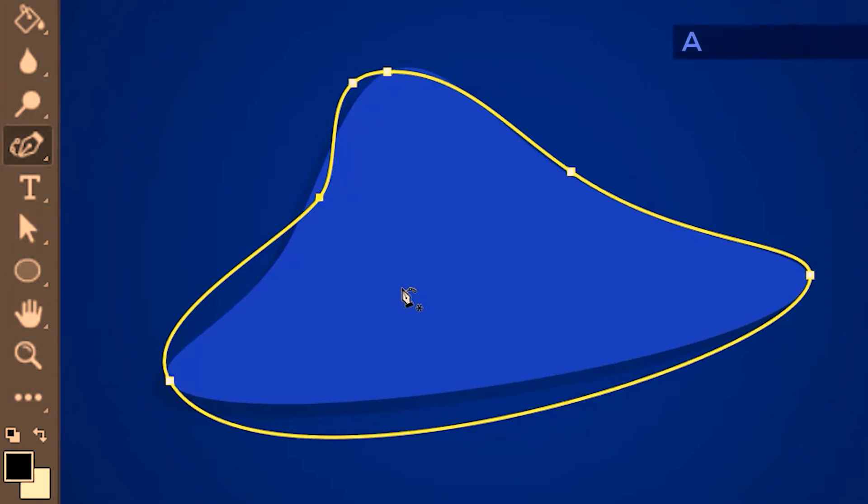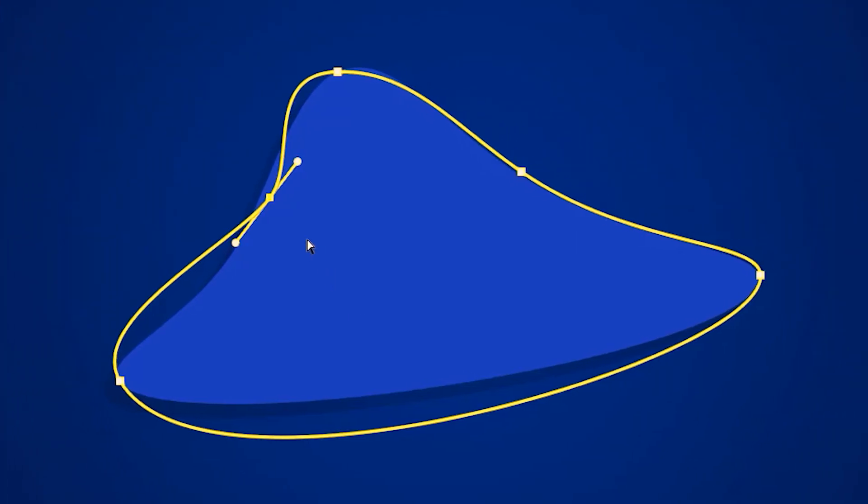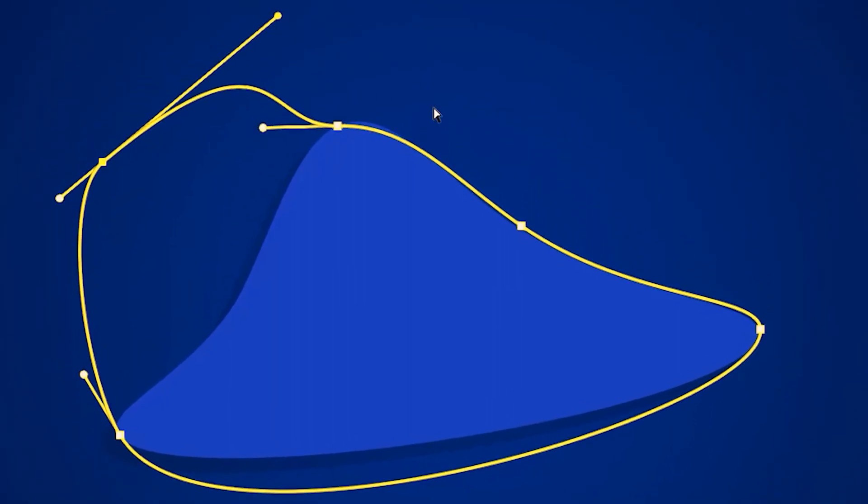I'm going to use its shortcut key A, which is same as clicking on the direct selection tool. Now you can move the anchor as well as adjust its handles. Next, I'm going to show you a few tricks while tracing this shape. Let's click here. Let's click the second anchor over here as a guide for the curve and place the third one here.